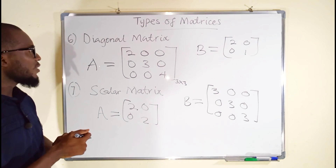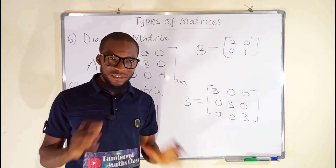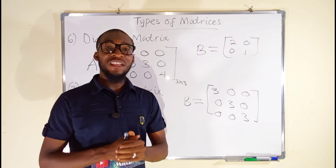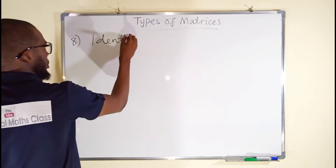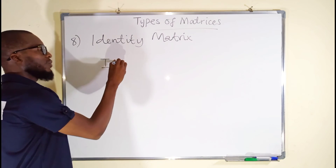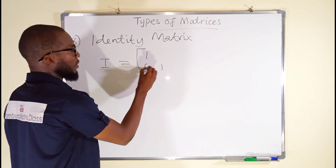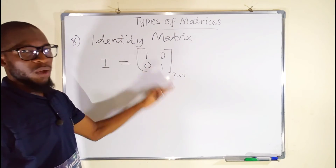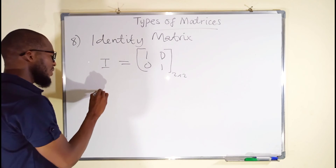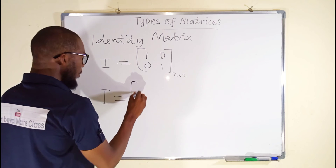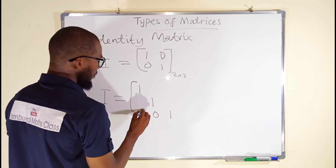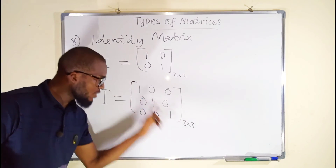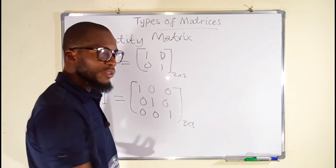Another matrix, which is also a subset of the diagonal matrix, is an identity matrix. An identity matrix is also a diagonal matrix but all the diagonal elements are equal to one, and it is denoted by the capital letter I. So any matrix of the form [1, 0; 0, 1] is a two-by-two identity matrix because the diagonal elements are all equal to one and all other elements remain zero. You may have another one for three by three: [1, 0, 0; 0, 1, 0; 0, 0, 1] — this is also an identity matrix because the diagonals are all equal to one. Even if it is four by four, all the diagonals will remain equal to one.